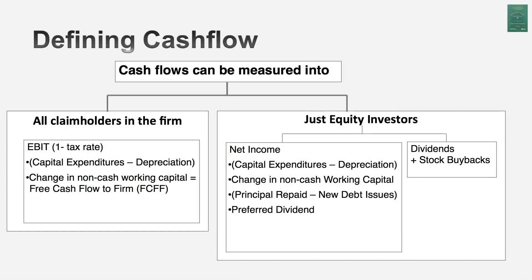There are two ways you can estimate cash flows. One is cash flows to equity investors, which are cash flows left over after debt payments. The other is the cash flow to the entire business. For cash flows to equity investors, the simplest and oldest way is dividends — that's the dividend discount model. A slightly more augmented version includes stock buybacks, especially for US companies. There's also a third way: estimating potential dividends — what a company could have paid out rather than what it actually paid out, i.e., how much cash is left over after every other need has been met.